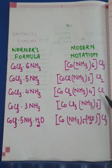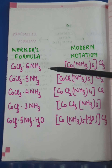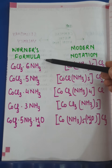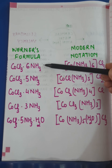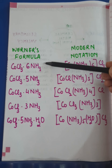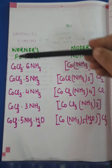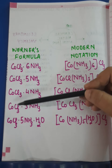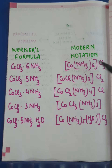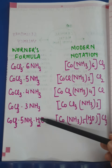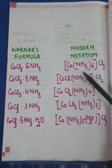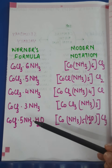I have listed out here five compounds and we'll see the difference. The first one is CoCl₃·6NH₃. In Werner's formula there is no difference between primary and secondary valency — they are just represented in addition form. Werner prepared coordination compounds by the action of ammonia on cobalt chloride and simply wrote their formula this way.